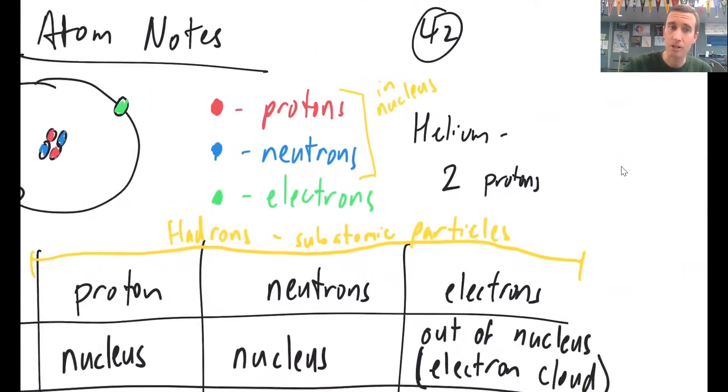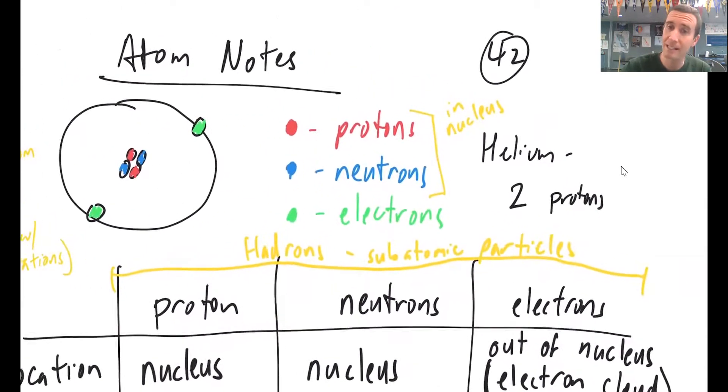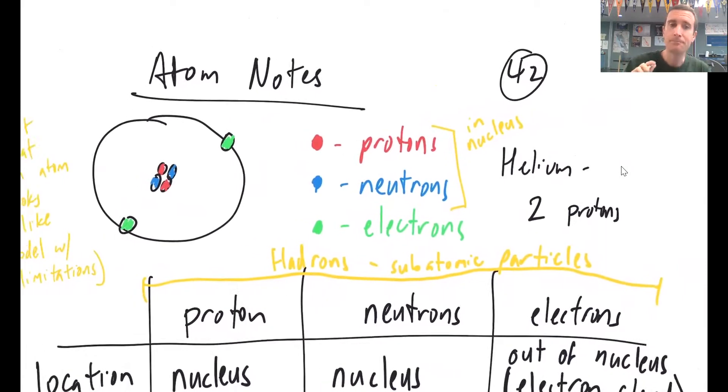So atoms are determined by the number of protons that they have. And then those often match with the number of neutrons. And if it is a neutral particle, then it also matches with the number of electrons. The number of electrons can change, and that would change the charge of the atom overall.